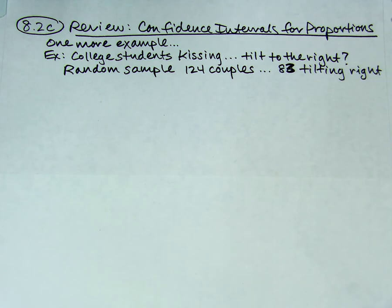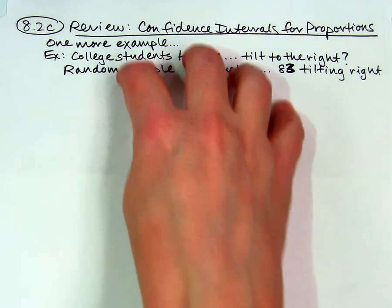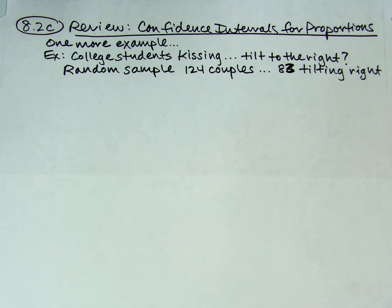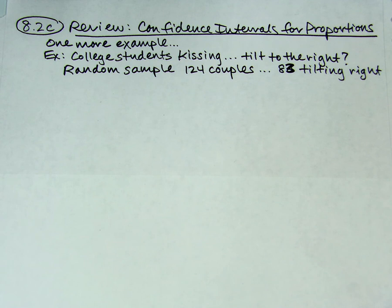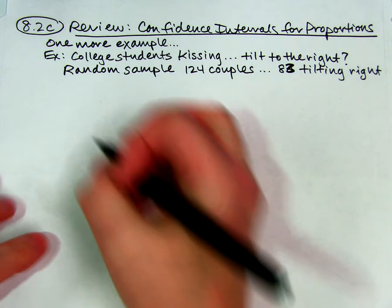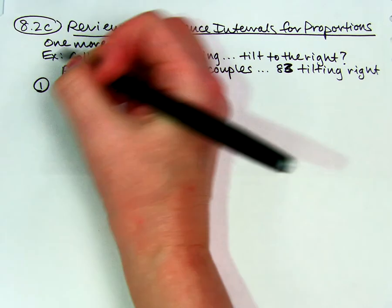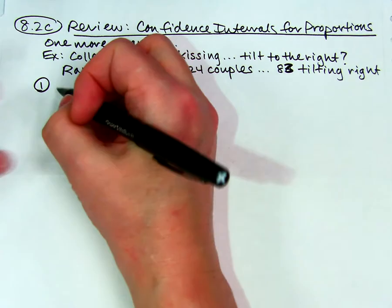So here's where, if this was an AP problem, they would say find a confidence interval, and then give you a big blank page. We're going to do all of that, but keep in mind they'll never want you to just do the calculations — they'll always want the four steps. So we're going to do all four steps, one more example just to be sure.